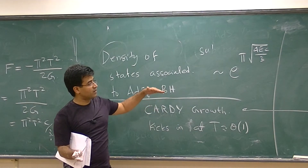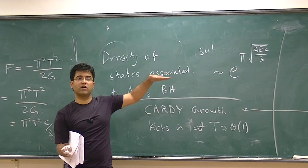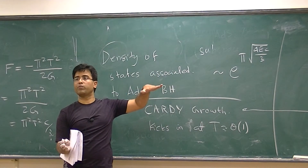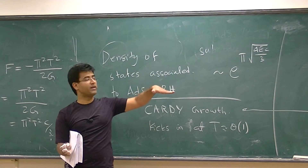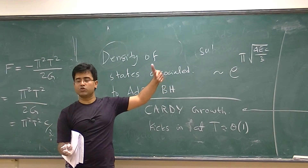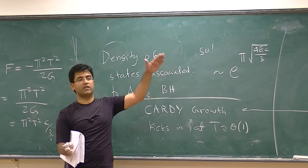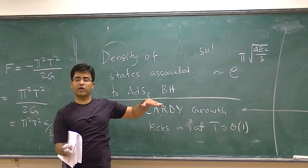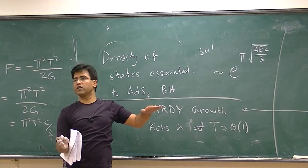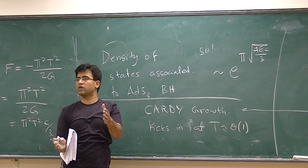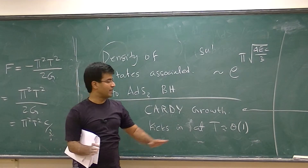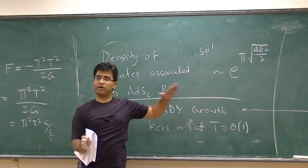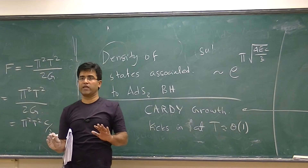In particular, there are many examples in string theory where conformal field theories engineered in appropriate D-brane systems are dual to string theories compactified on ADS3 cross S3 cross something. In those cases, one can argue that the properties of those CFTs are sufficiently exotic that they must exhibit this kind of behavior. But this behavior is by no means generic.